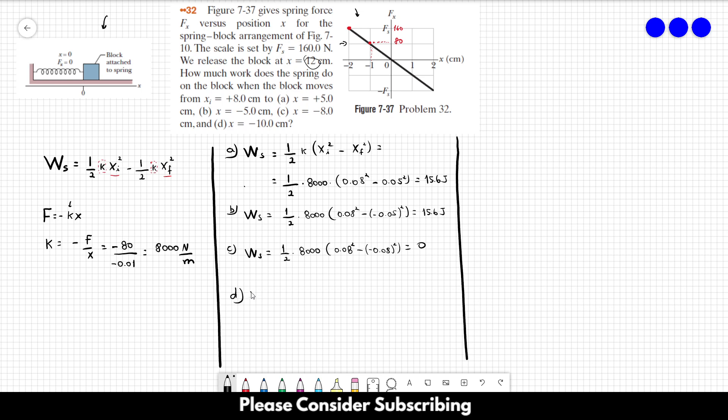As for letter D, it's going to be 1 over 2 times 8,000 times 0.08 squared minus minus 0.1 squared. And this gives us minus 14 joules. And this is problem 32.